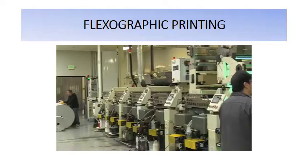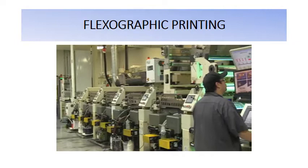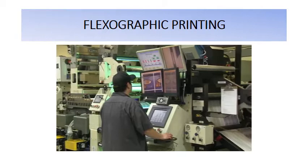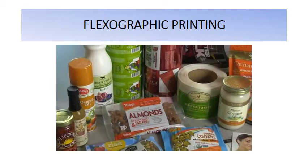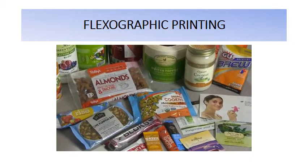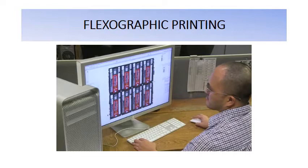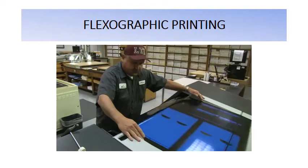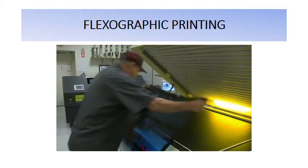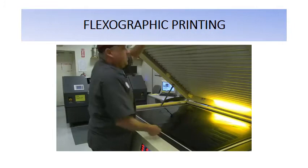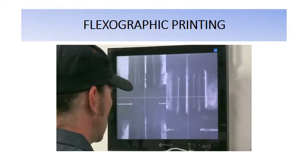Flexographic printing, most often called flexo, is a form of relief printing where ink is applied to a raised image on a flexible plate and then impressed onto a substrate. Its use has grown in recent years because of improvements in print quality, the capability to print on many different substrates, and the use of environmentally responsible water-based inks. The printing process begins with artwork optimized for flexo, followed by manufacturing a flexible photopolymer printing plate exposed to UV light, building up the image areas above the base level of the plate.